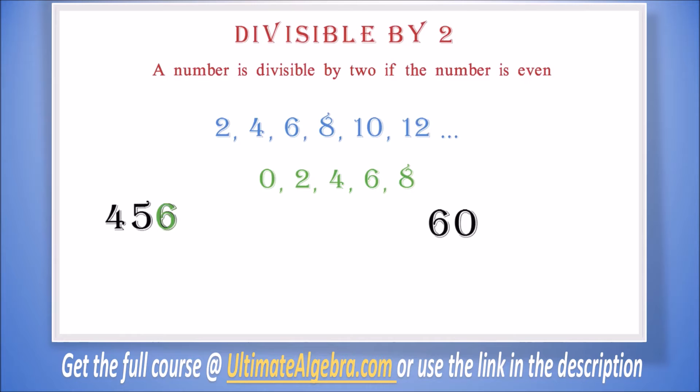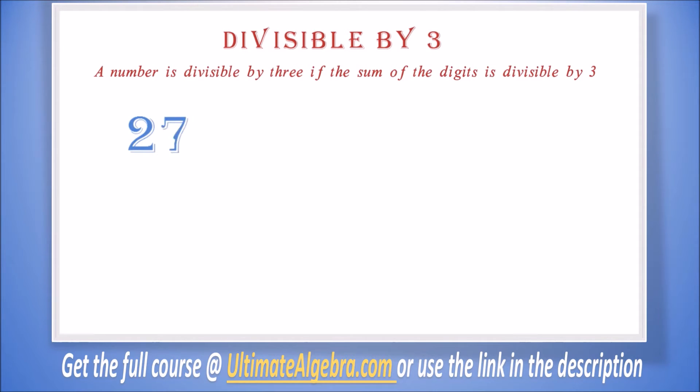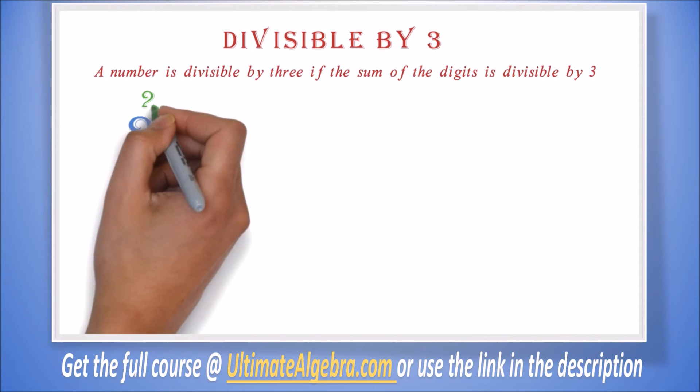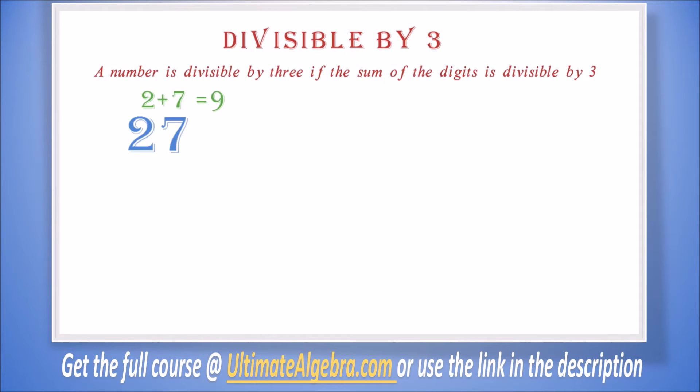Divisible by 3: A number is divisible by 3 if the sum of the digits is divisible by 3. For example, 27 is divisible by 3 because when you add the digits 2 and 7 you will get 9, and we know that 9 is divisible by 3.